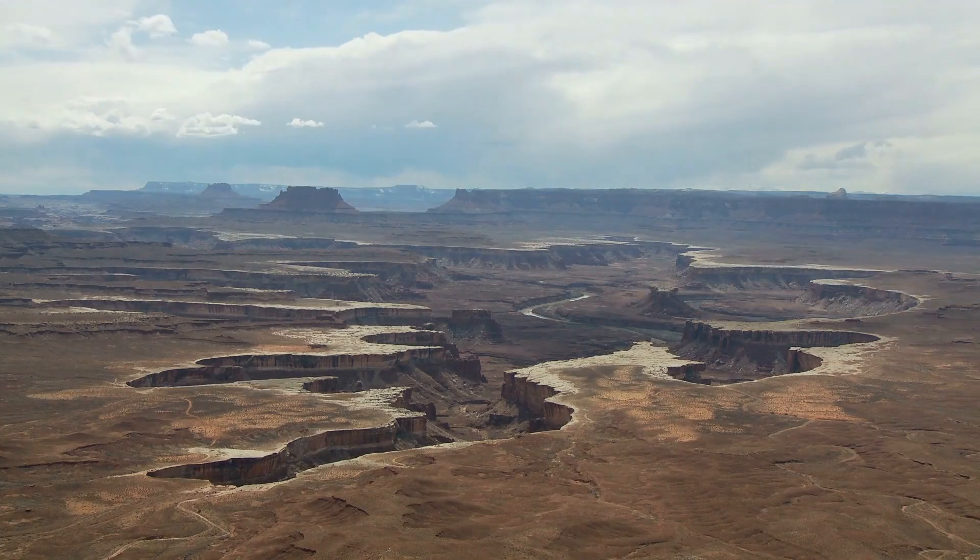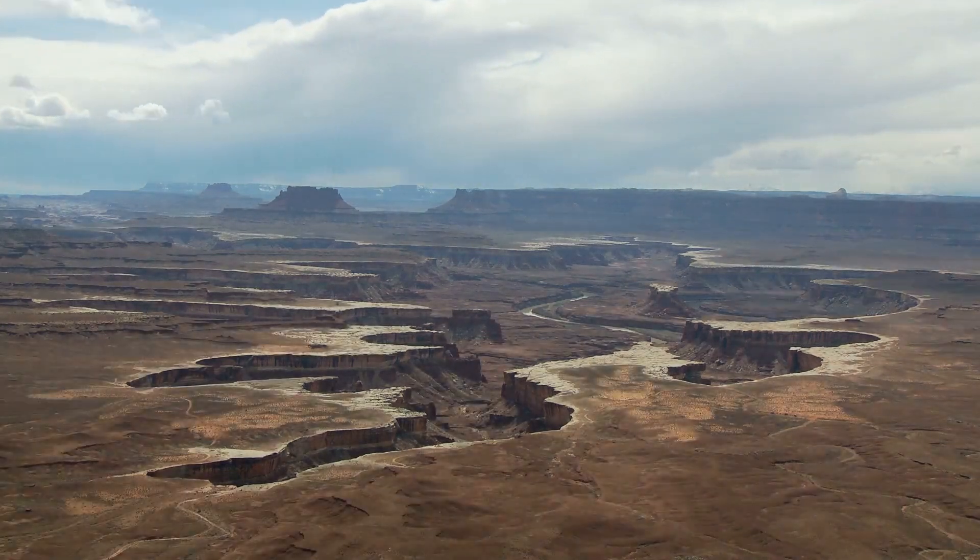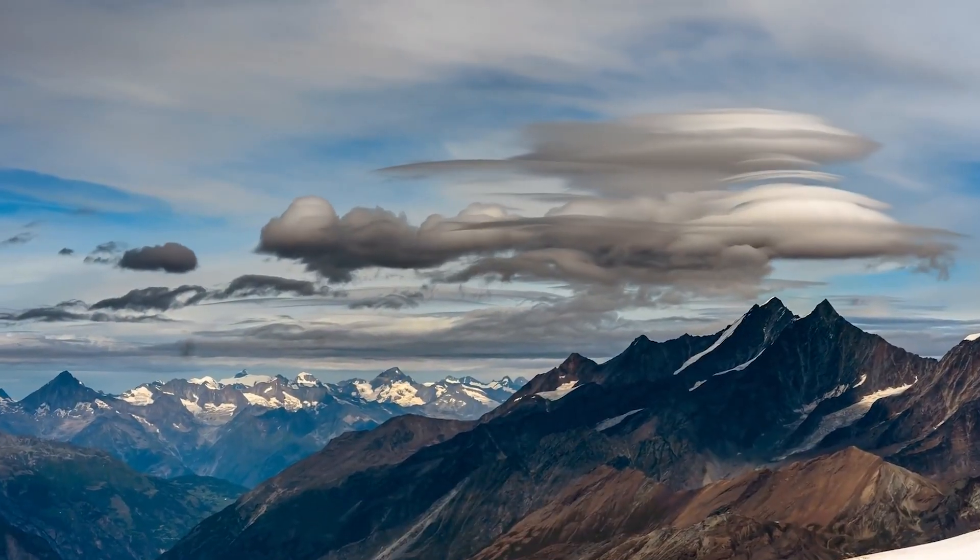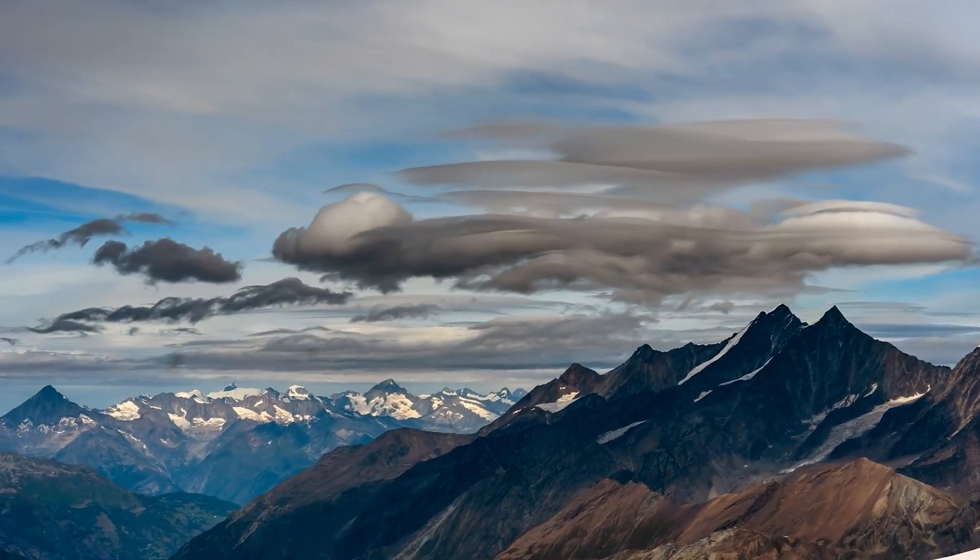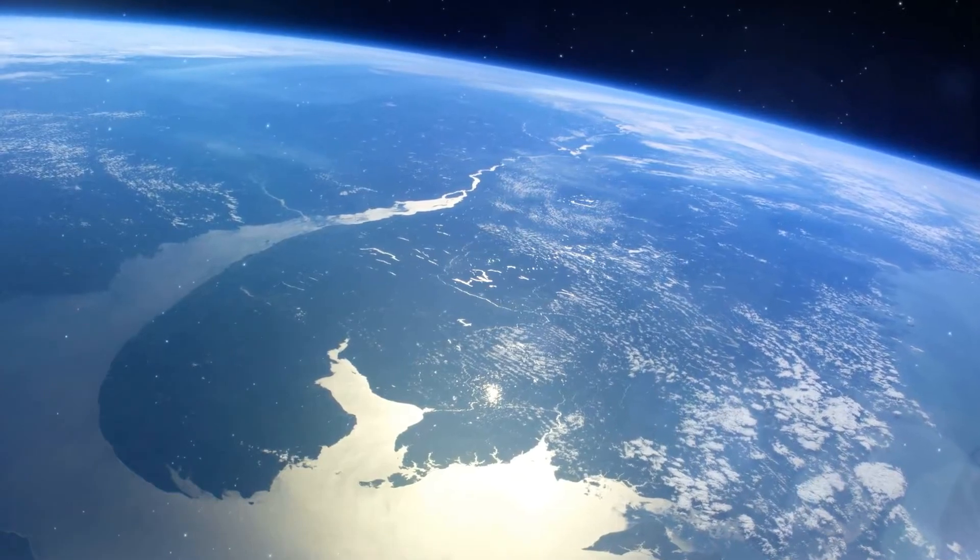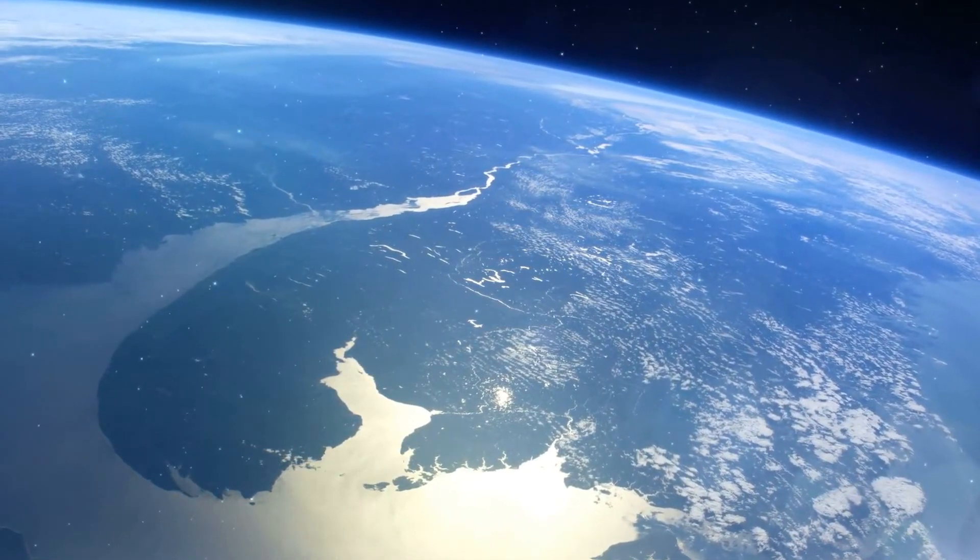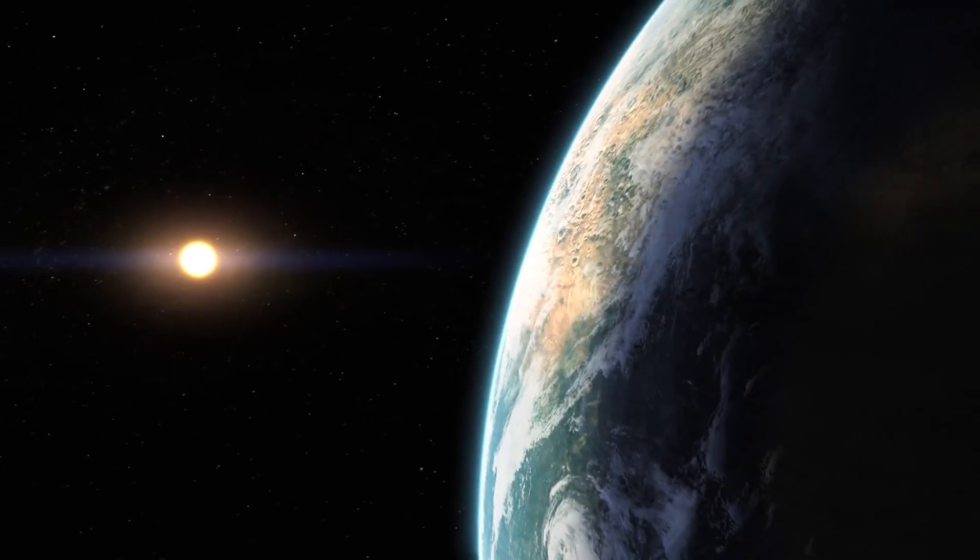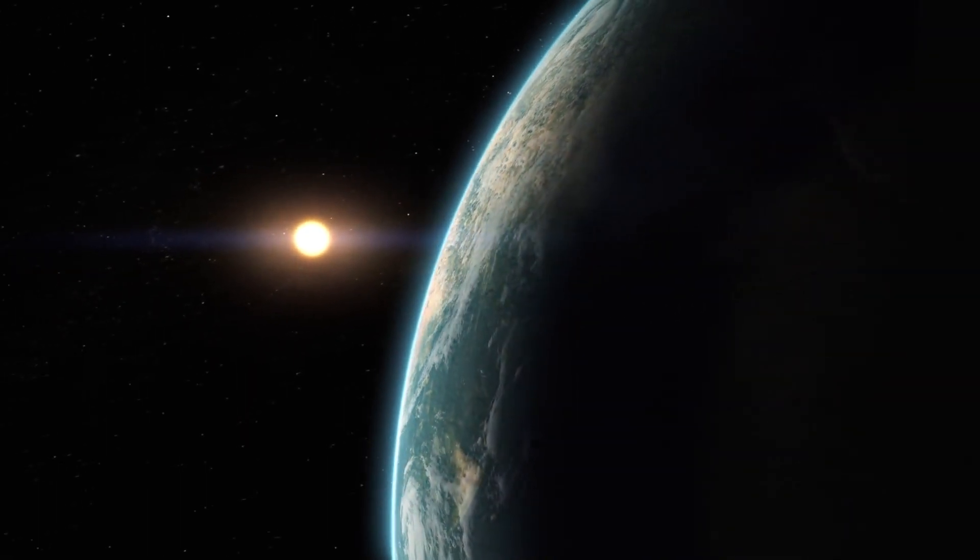Another model depicts the planet as a cloudless all-land version of modern Earth, where winds flow away from the dark side of the planet and converge on the point directly facing the star. When starlight passes through it, it interacts with molecules like carbon dioxide and nitrogen to produce distinct signals called spectral lines.